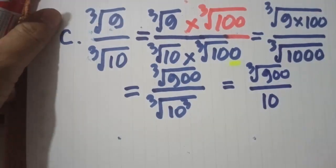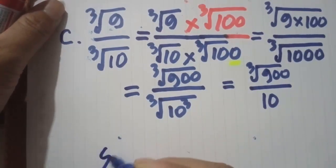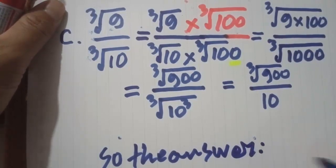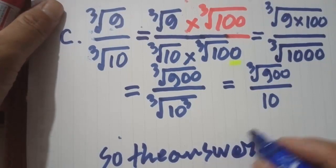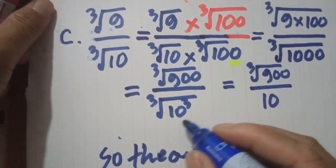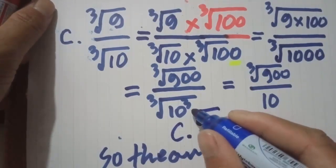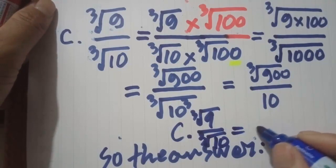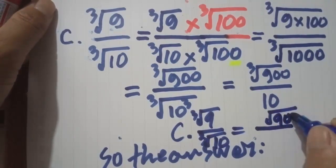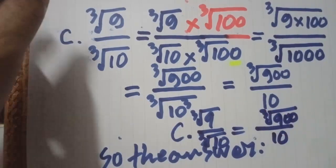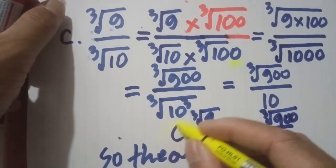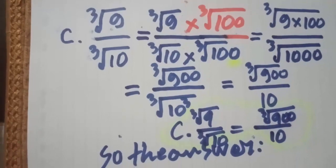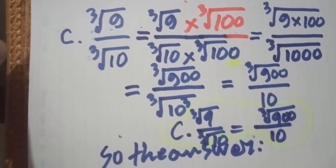Okay, so this is the answer. The answer: Radical 3, 9 on Radical 3, 10 equals Radical 3, 9 and Radical 3 on 10. This is the answer. So thank you for watching and see you next video for exercise D. Goodbye, see you next video!